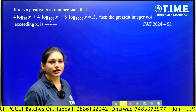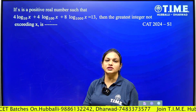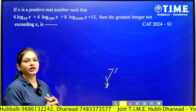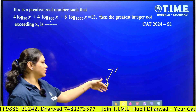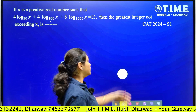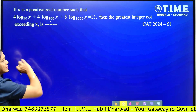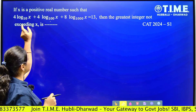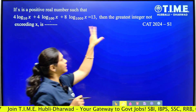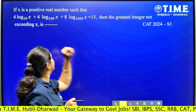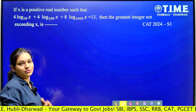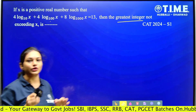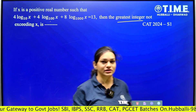This question is from logarithms, and it is one of the easiest questions asked in 2024. If we know the basic rules of logarithms, that is more than enough to solve this type of question. Let's understand the question: if x is a positive real number such that some logarithm expression is given, then the greatest integer not exceeding x is the question. So first we will simplify the logarithm and get the value of x.